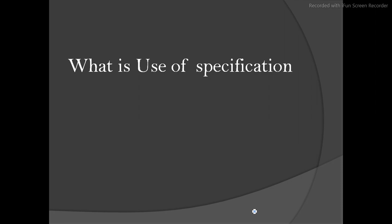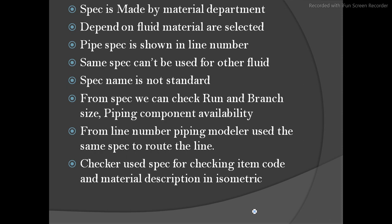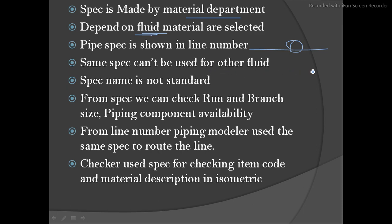What is the use of spec while doing piping modeling? Spec is made by the material department. Depending on the fluid, materials are selected. The spec is shown in the line number. The same spec cannot be used for other fluids — as previously mentioned, water requires one material and oil requires another, so the same spec cannot be used for a different fluid.